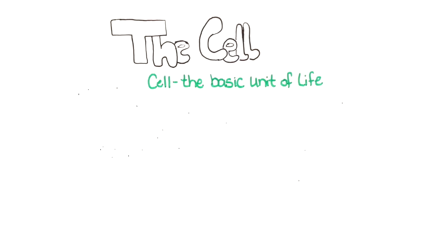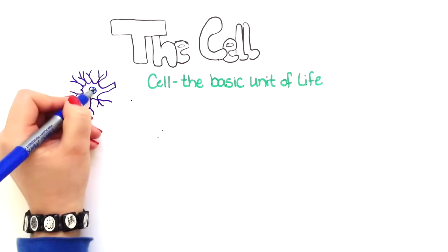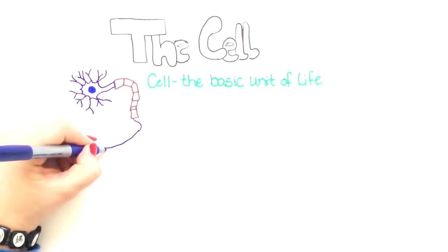The cell is the basic unit of life. There are lots of different types of cells. Each type of cell is different and performs a different function. In the human body, there are 200 different types of cells.